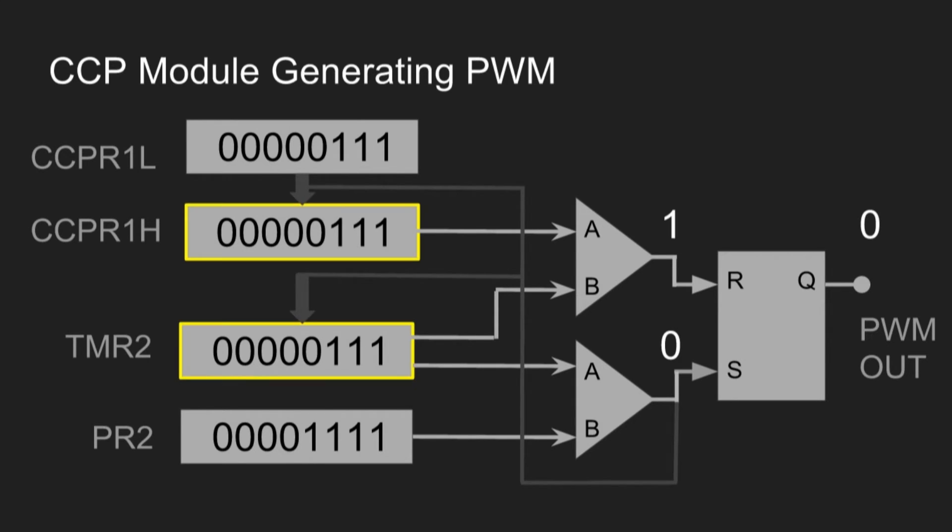Output goes 0 when the duty cycle value matches with timer value.